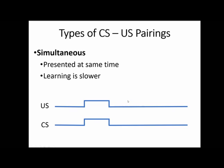The next one is a little bit easier to remember: simultaneous presentation, where both stimuli are presented at the same time. So you ring the bell and give the dog food all at once. Interestingly, learning is a lot slower with this type of presentation. That's probably because they're getting the food at the exact same time they're hearing the bell, so they're not really paying attention to the bell. This one doesn't work as well as either of the forward pairings.